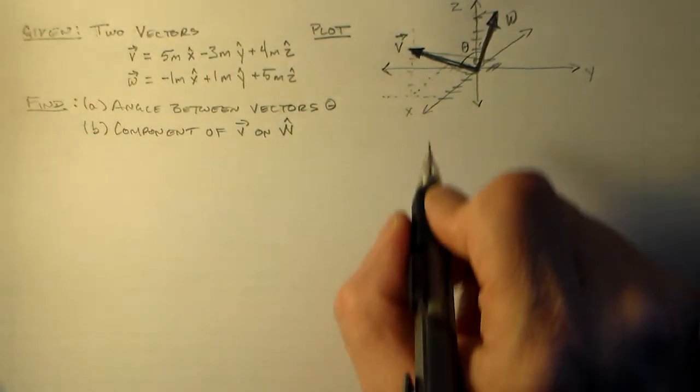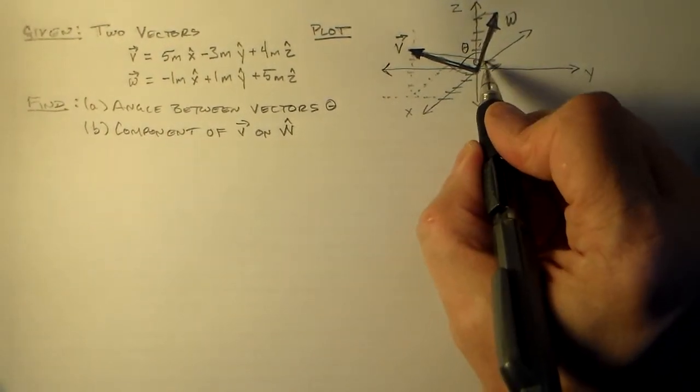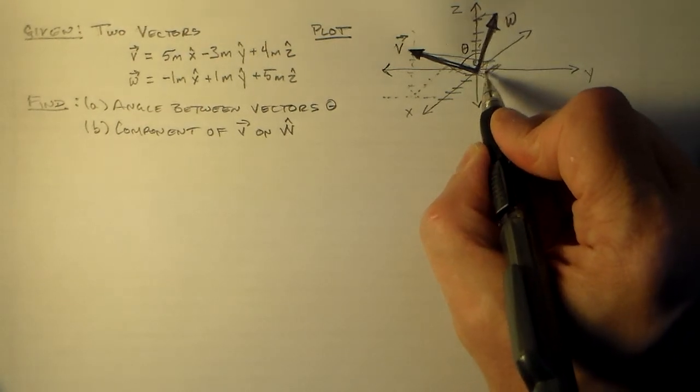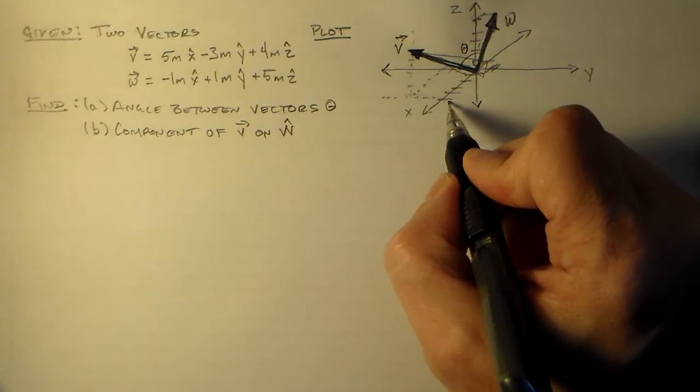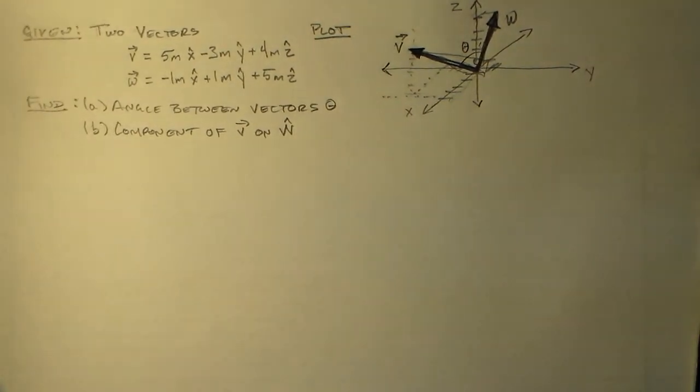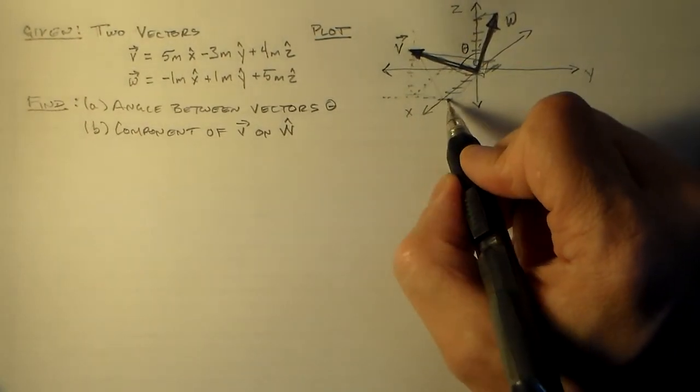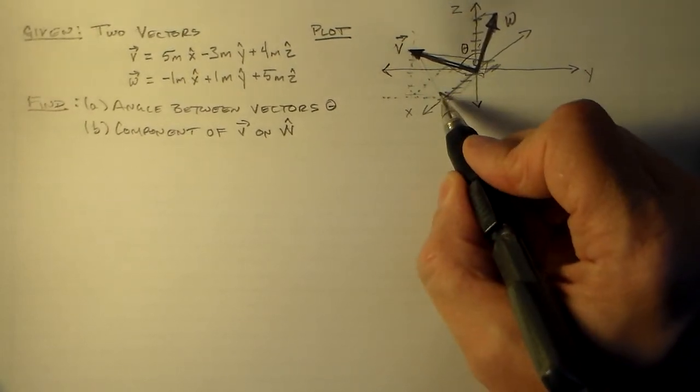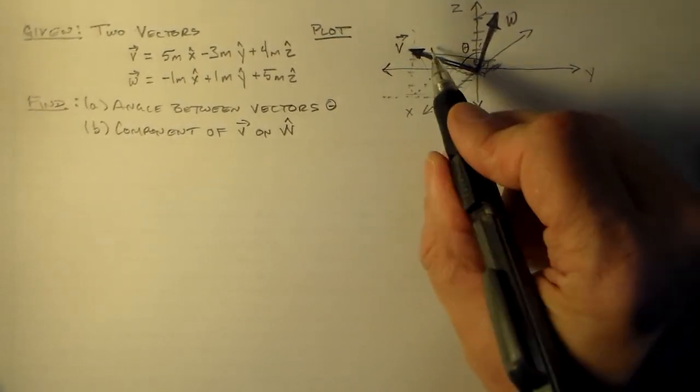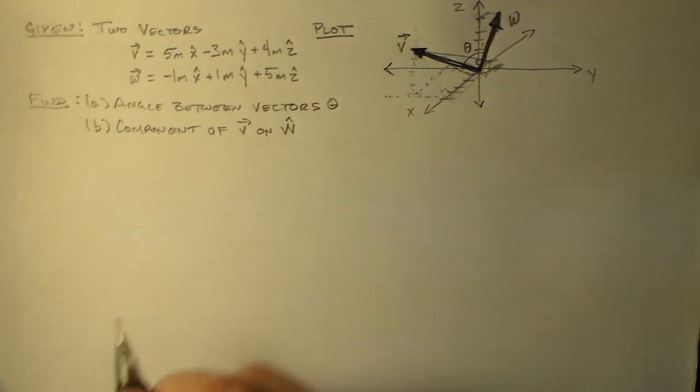So we call that the component of v in the direction w, right? And it's just this size here. And it's just like saying, okay, well, what is the component of v in the x direction, right? We're doing that same thing. We're trying to figure out what this length is. If it was v in the x direction, it would be that thing. But we're not talking about v. We're not talking about the x direction. We're talking about the w direction.